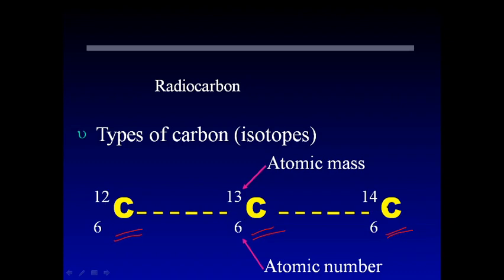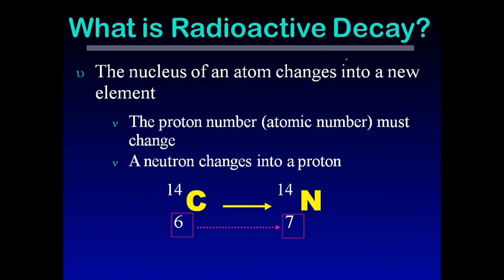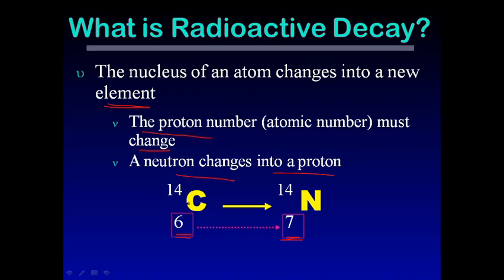In a radioactive decay, the nucleus of an atom changes into a new element. If an atom is converted into another element, the proton number must change. That means the destruction of the current element, which is decaying into another element, will happen only if the proton number changes. For example, in the decay of C-14, C-14 gets changed into N-14. In this process, a neutron changes into a proton.